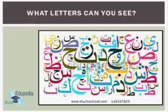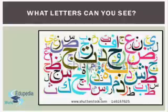We have Da — can you see Da? Da, it is all over here. Da — Dajaj — chicken. We have Da — Zahab — gold.